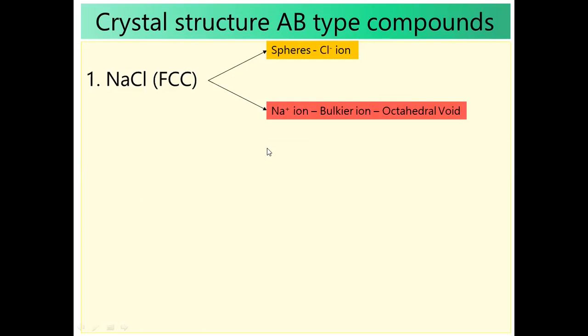If you have a bulkier cation, a unit cell contains n number of spheres, then it should contain n number of octahedral voids and 2n number of tetrahedral voids. In NaCl, we have the same number of Na and Cl, so Na should occupy the octahedral void only based on size and number.